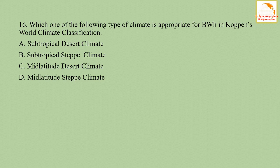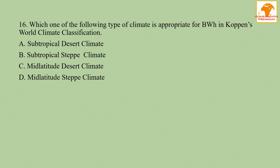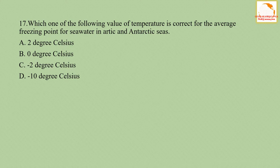Question number sixteen: which type of climate is appropriate for BWH in Koppen's world climate classification? Option A - subtropical desert climate, option B - subtropical steppe climate, option C - mid-latitude desert climate, option D - mid-latitude steppe climate. Option A is correct. In Koppen's world climatic classification, the subdivision BWh stands for subtropical desert climate.